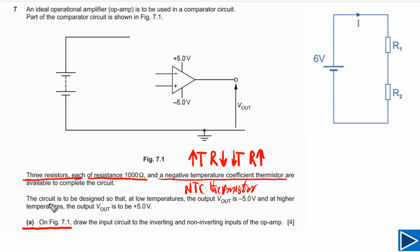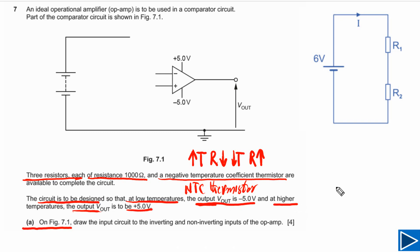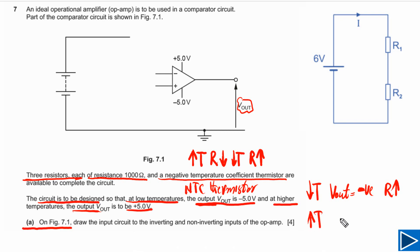The next question tells us we need to design a circuit. The condition is that at low temperature, Vout has to be negative, and when temperature is higher, Vout has to be positive. When temperature is low, the resistance of the thermistor will be higher. When temperature is higher, the resistance of the thermistor will be lower.